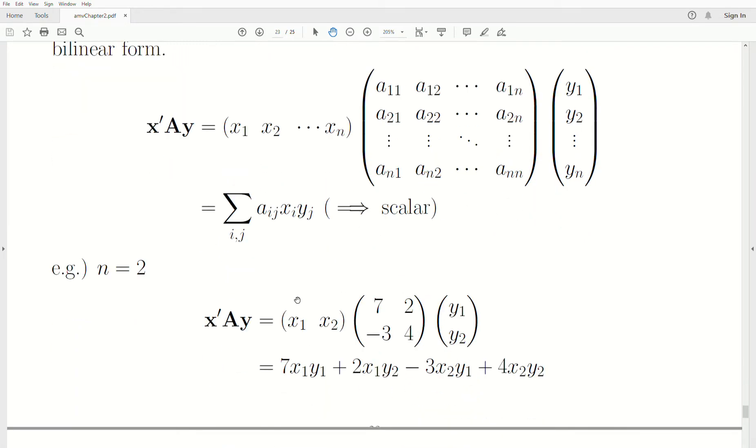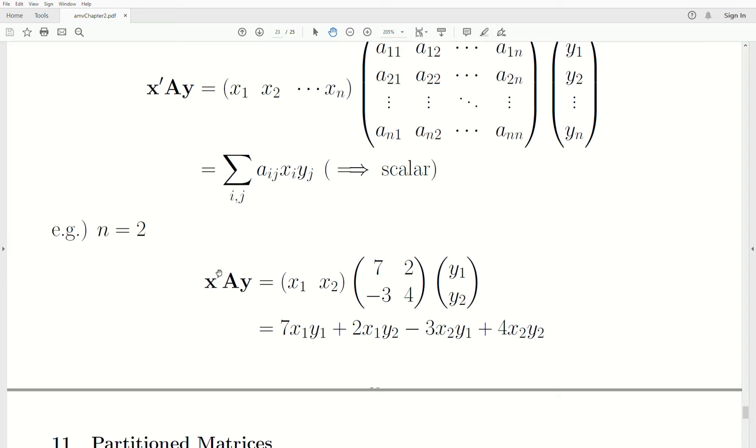Quick example would be this. So X transpose A, Y. And notice that this is the row 1, column 1, 1, 1. And this one, or let's go to this one. This is row 1, column 2. And so those subscripts match up. So this minus 3, row 2, column 1. And then this is the 2, 2 case.